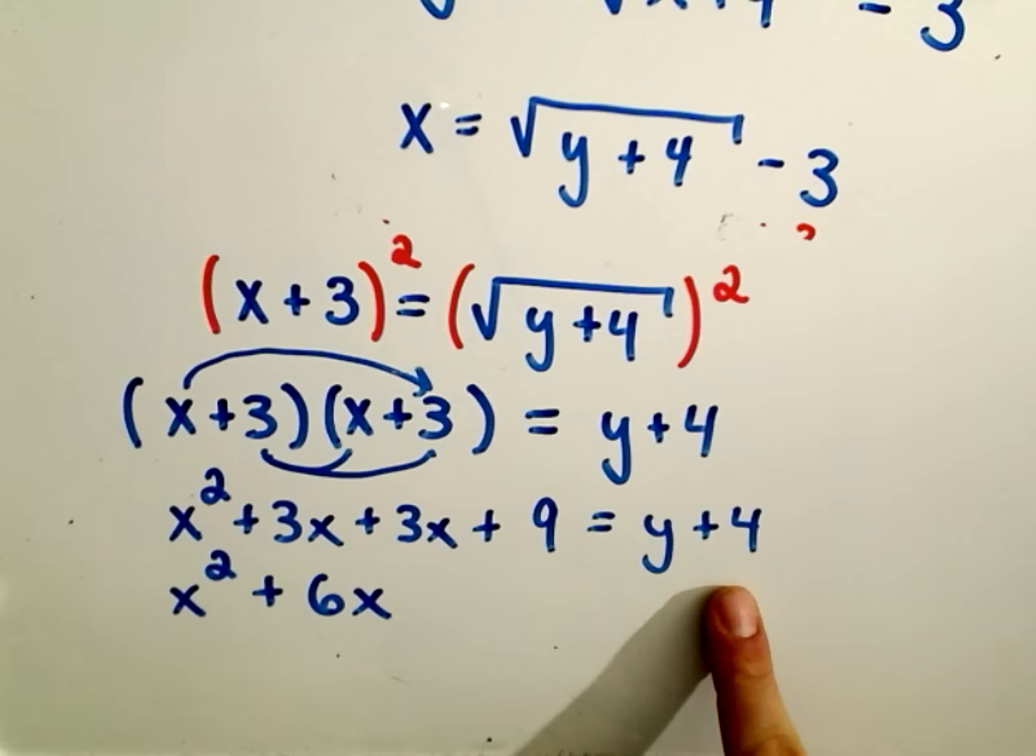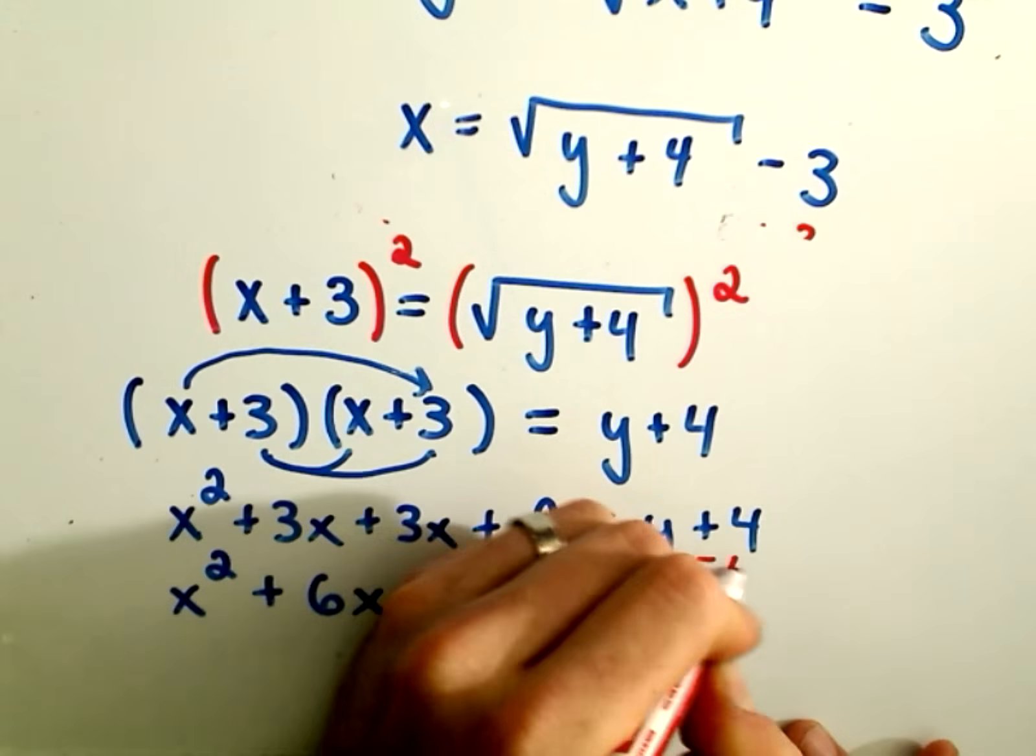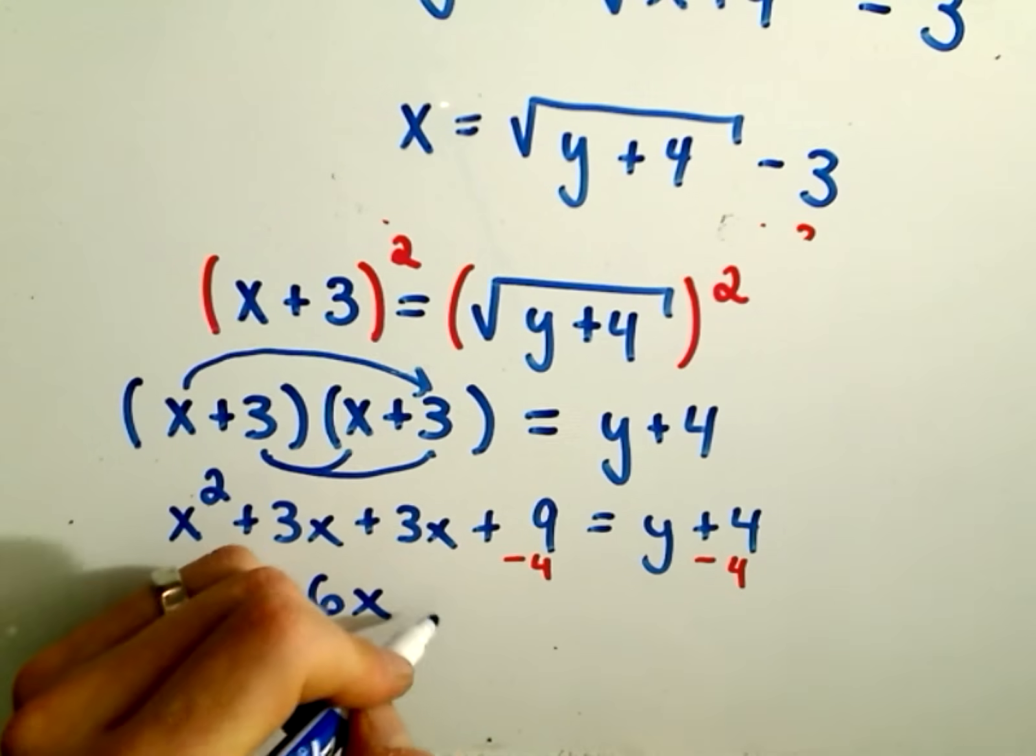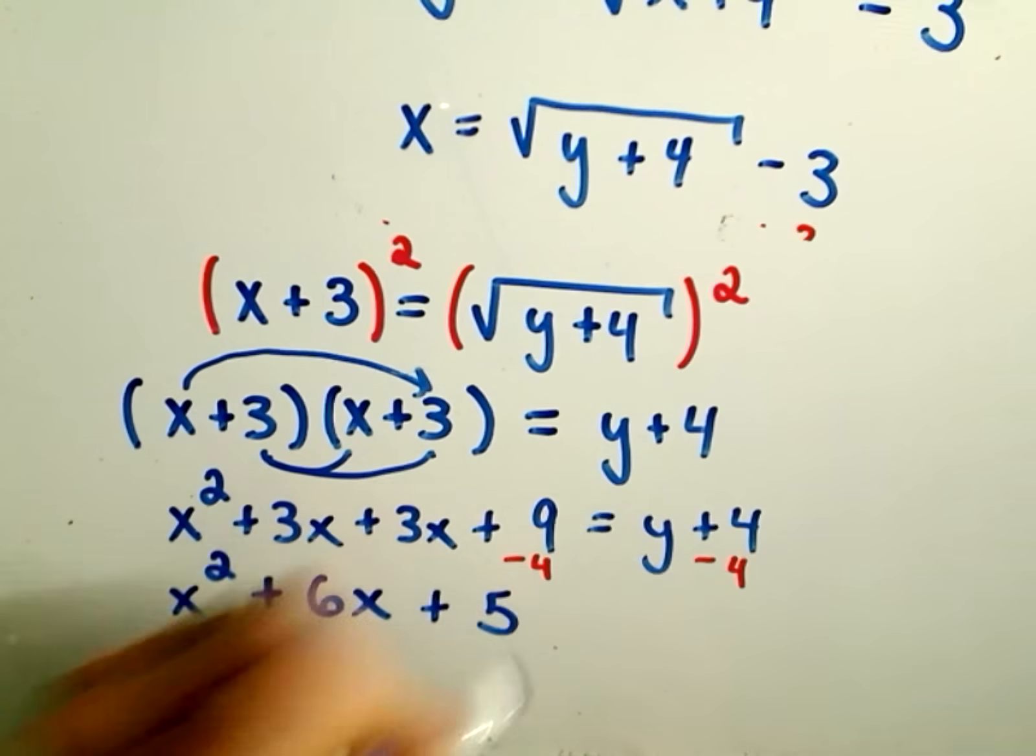And now on the left side, I've got x squared plus 6x. And at the same time, I want to get y by itself, so I'm going to subtract 4 from both sides. So if I subtract 4, I'll simply be left with positive 9 minus 4, or positive 5.